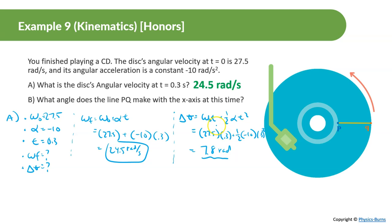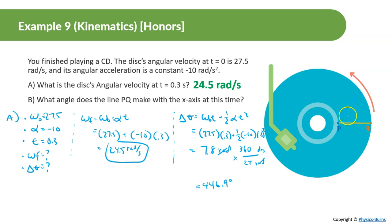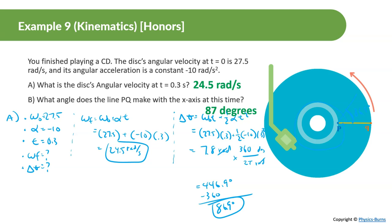Part B: what angle does line PQ make with the x-axis at this time? We find the change in theta using change in theta equals omega initial times t plus one-half alpha t squared: 27.5 times 0.3 plus one-half times negative 10 times 0.3 squared, giving 7.8 radians. Converting to degrees: 7.8 times 360 divided by 2 pi equals 446.9 degrees. Subtracting 360 degrees gives 86.9 degrees, so the line makes an angle of 86.9 degrees with the x-axis.